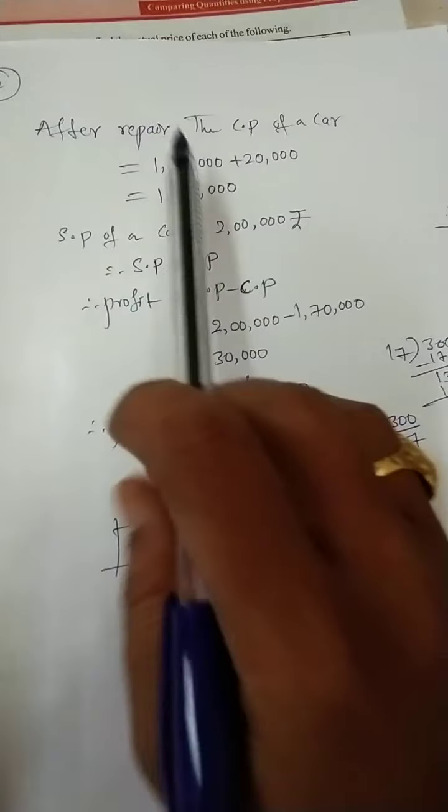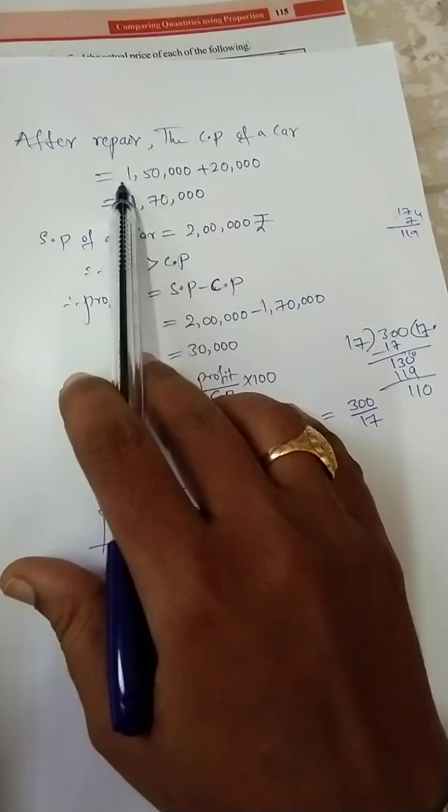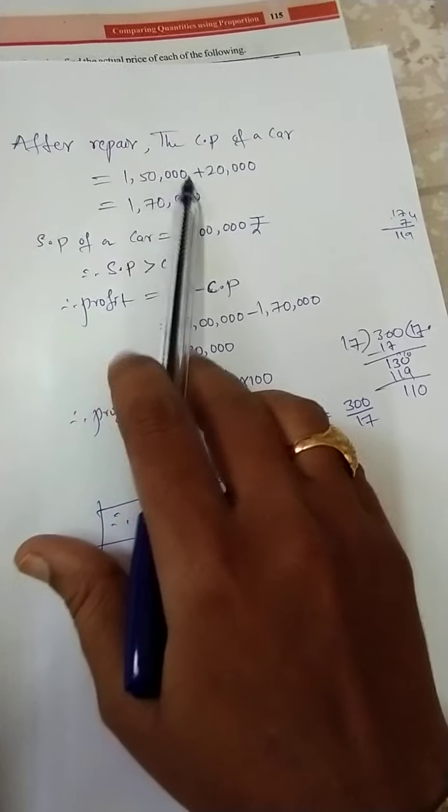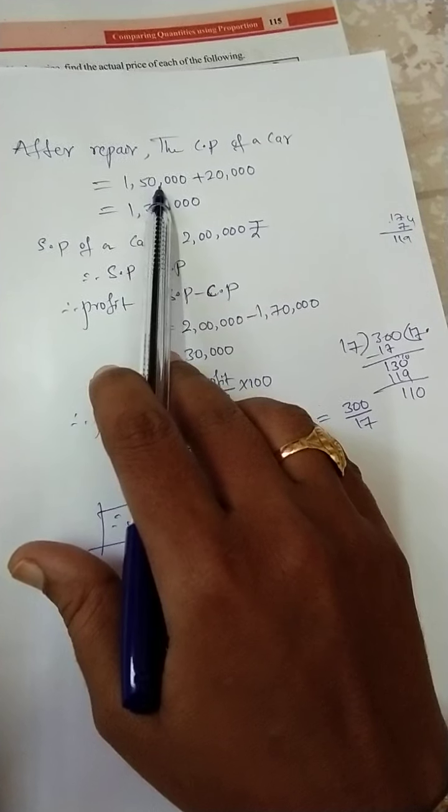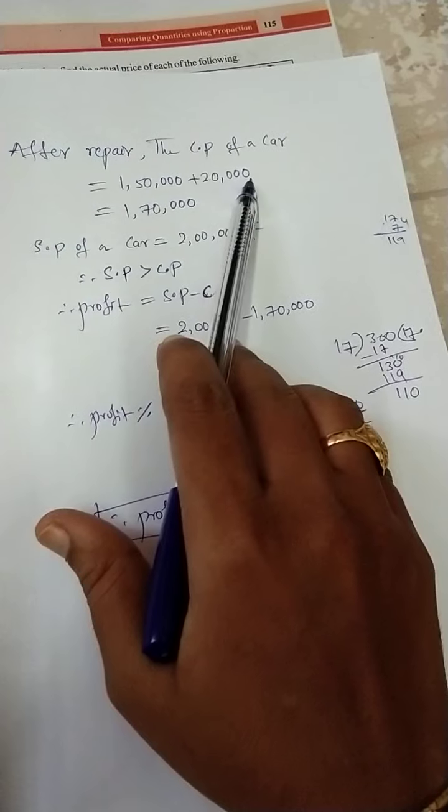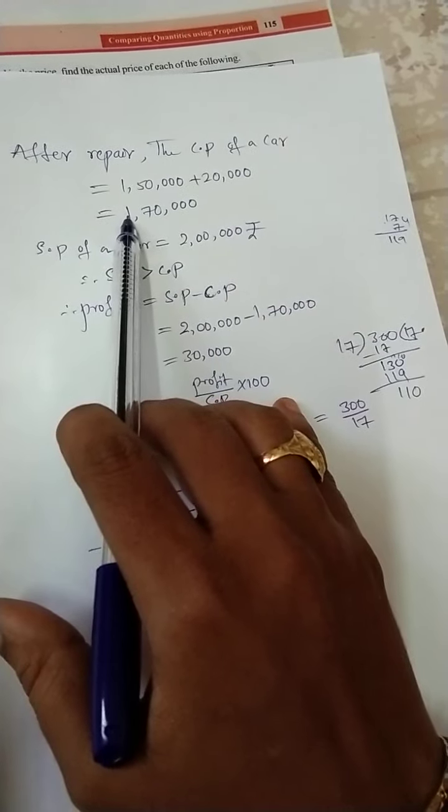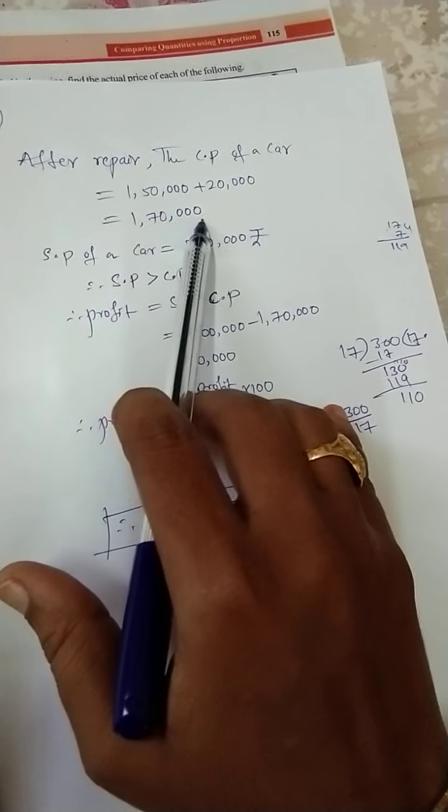Very simple. After repair, the cost price of a car: the actual price is 1 lakh 50,000, then repair cost 20,000 rupees. We should add these two, we should get the cost price of a car: 1 lakh 70,000.